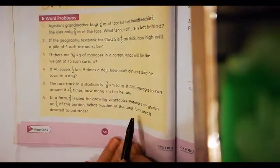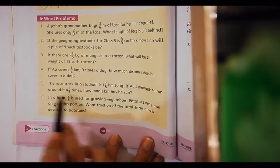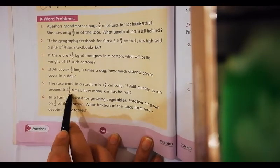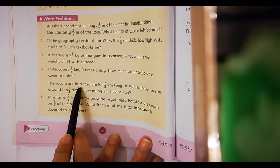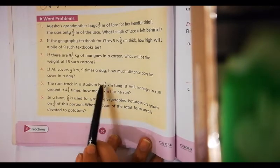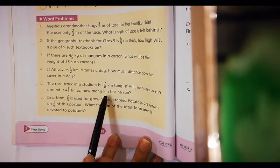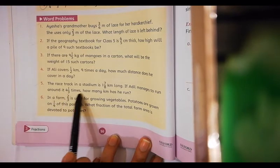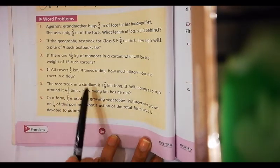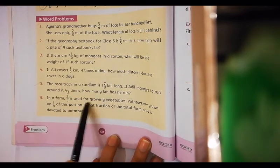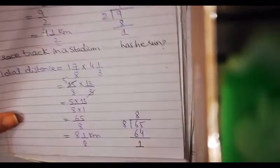Question number 5: The race track in a stadium is 1 whole 7/8 km long. If Ali manages to run around it 4 whole 1/3 times, how many km has he run? The race track is 1 whole 7/8 km. Ali runs around the race track 4 whole 1/3 times. I have to find out total distance.